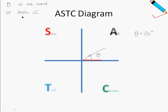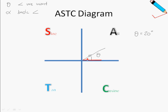Alpha is the basic angle and is always measured with respect to the horizontal axis. In the first quadrant, alpha is the same as theta. So for the first quadrant, alpha equals theta — this is something special and only applies to the first quadrant.